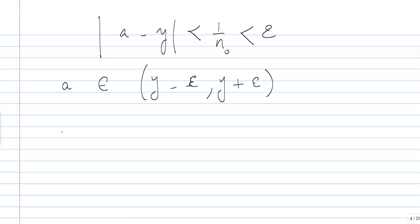Which implies that C, since A belongs to C, intersect Y minus epsilon, Y plus epsilon, is not empty.